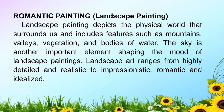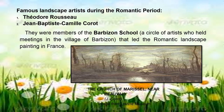Romantic landscape painting depicts the physical world that surrounds us and includes features such as mountains, valleys, vegetation, and bodies of water. The sky is another important element shaping the mood of landscape paintings. Landscape art ranged from highly detailed and realistic to Romantic and idealized. Famous landscape artists during the Romantic period include Théodore Rousseau and Jean-Baptiste Camille Corot, who were members of the Barbizon School — a circle of artists who met in the village of Barbizon and led Romantic landscape painting in France.